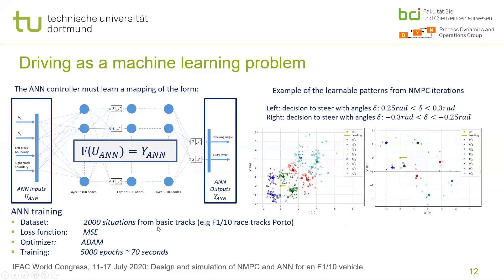We have taken 2000 situations — NMPC iterations on different tracks that I will present later. We used the mean square error as the loss function and optimized the parameters with the Adam optimizer. The training is also very fast: it takes around 70 seconds to train this network over 5000 epochs.